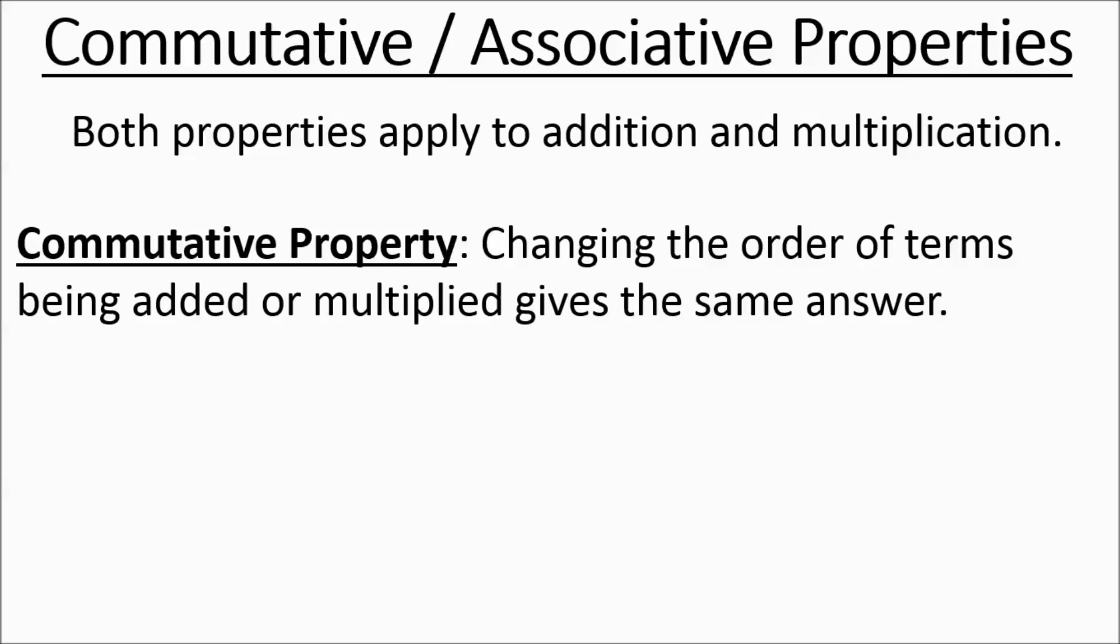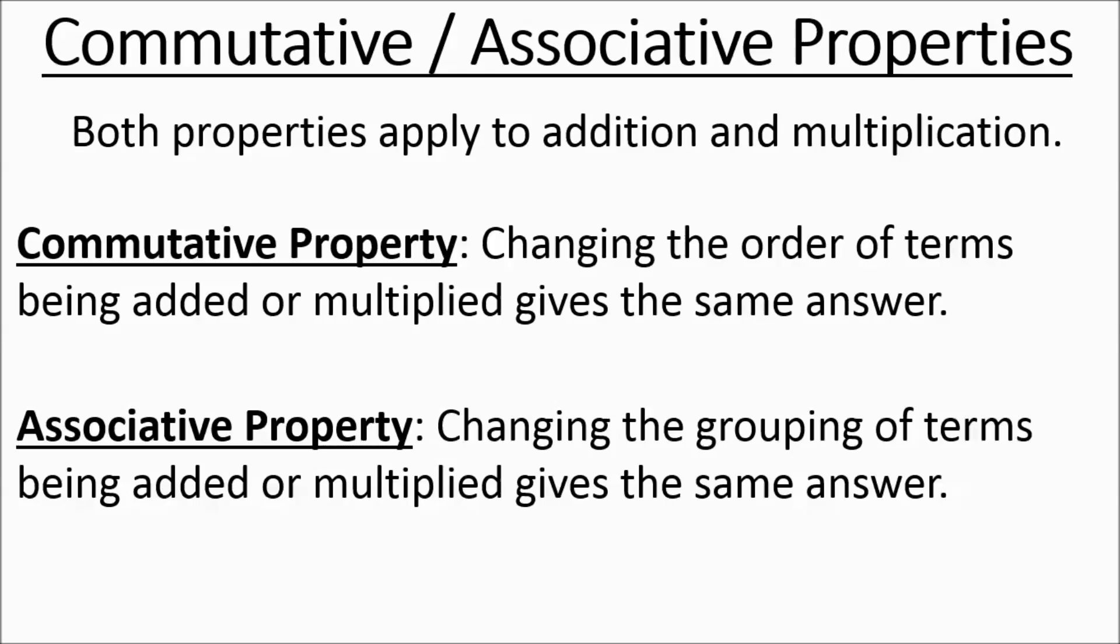The commutative property is when you're dealing with changing the order of the terms being added or multiplied, and it gives the same answer. So that's a change in order. Associative property is when you're changing the grouping of terms that are being added or multiplied, and it gives the same answer. So changing order versus changing of grouping. That's the difference between the two.